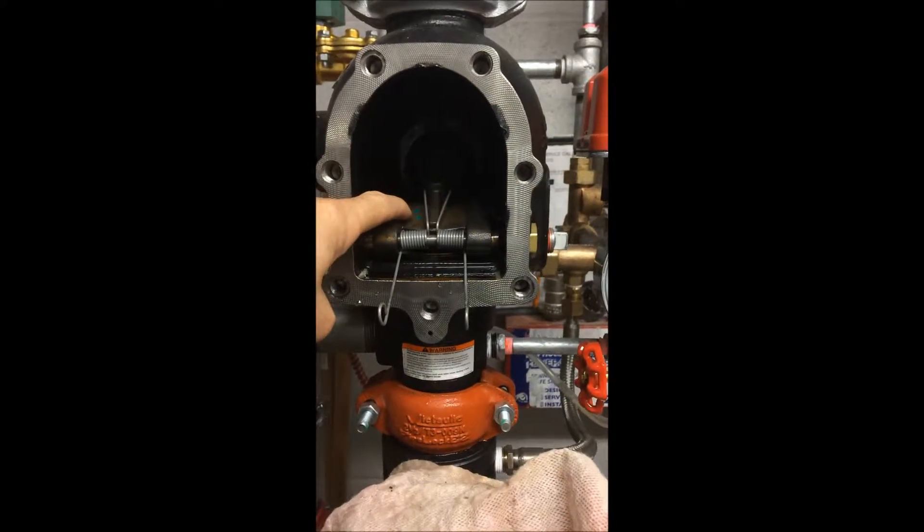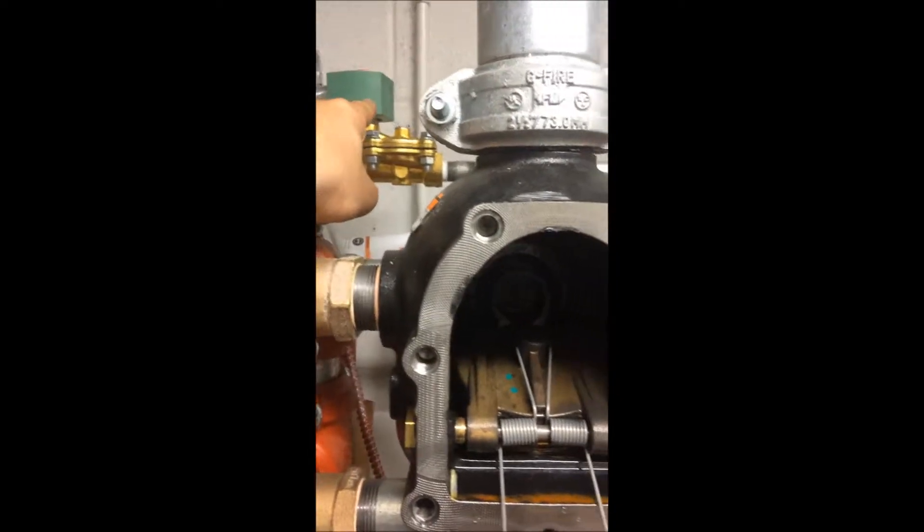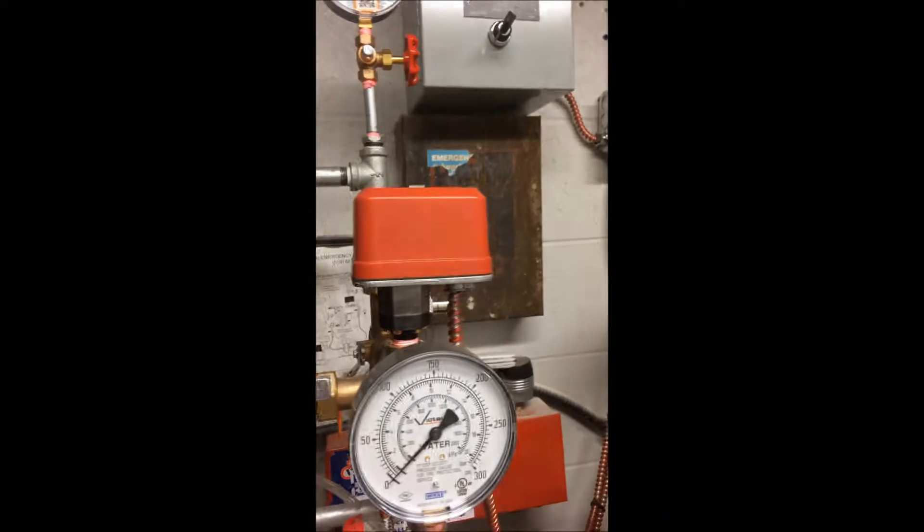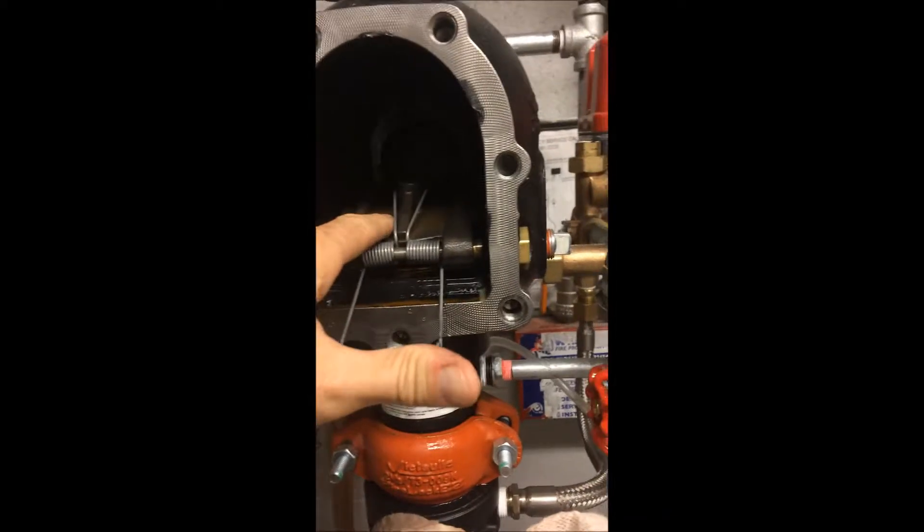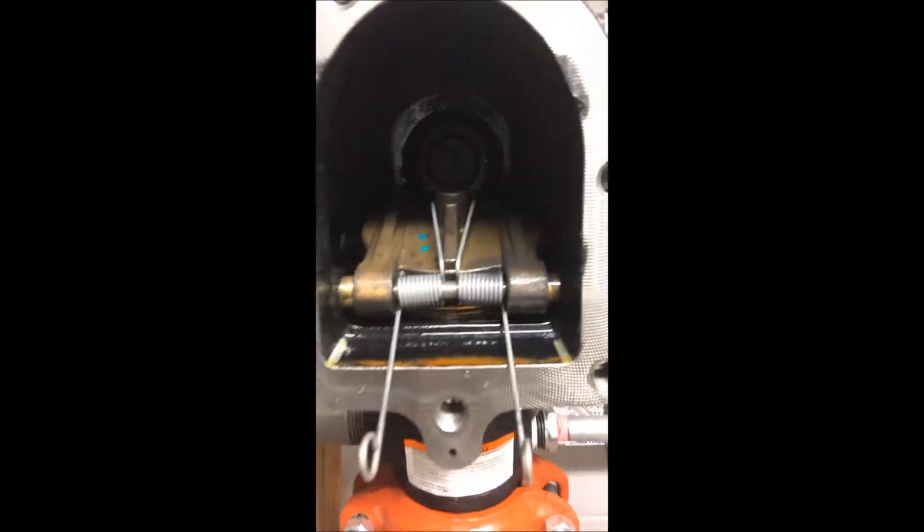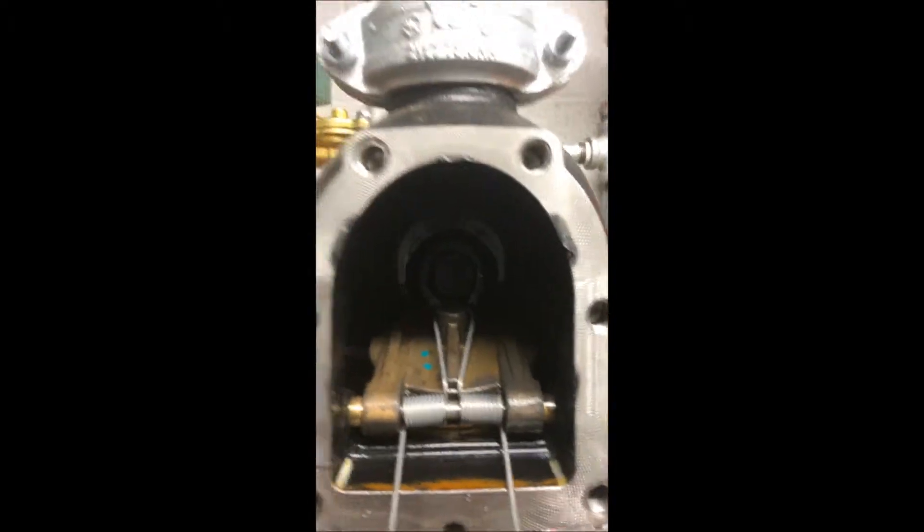Well, the problem is the solenoid is working here. It's fine. I have the pressure operating now because I have the valve open. But what's happened is sometimes the clapper gets caught up on the actual latch. And it won't reset.